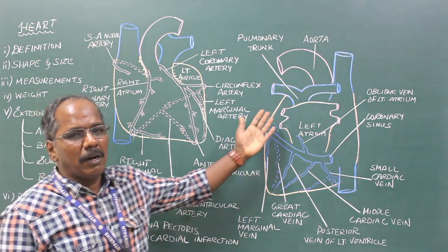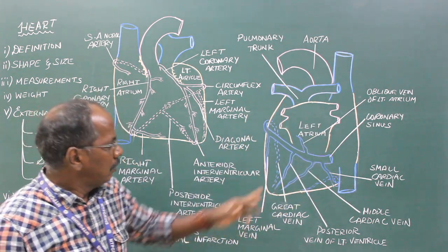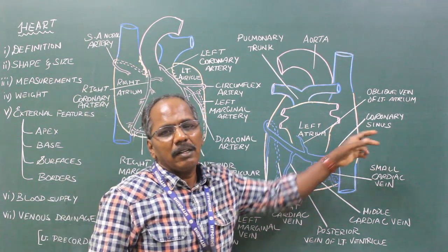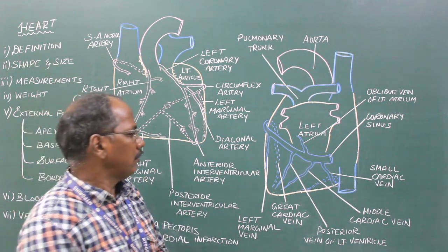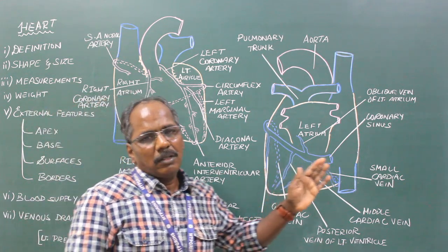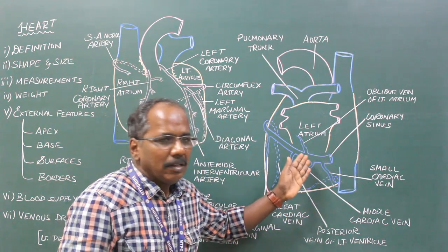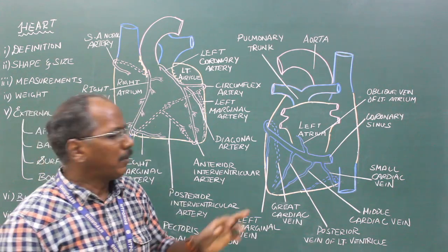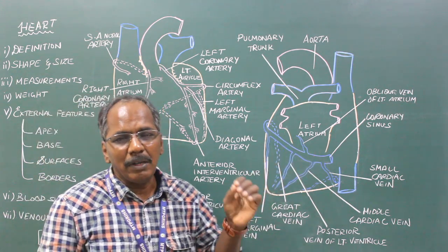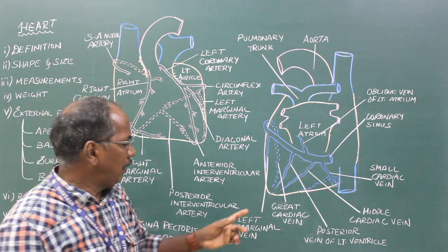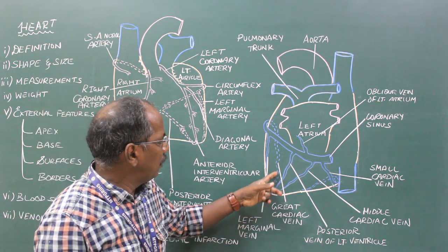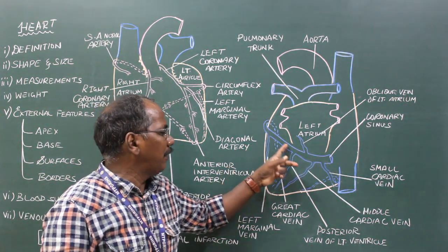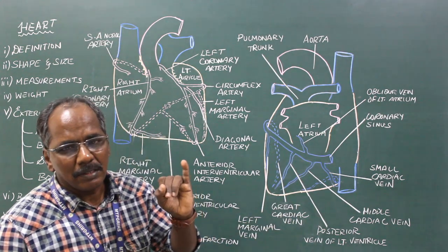Venous drainage of heart. The coronary sinus is the chief vein of the heart which drains the venous blood. The coronary sinus receives the following tributaries. Number 1, great cardiac vein — the coronary sinus is the continuation of the great cardiac vein.